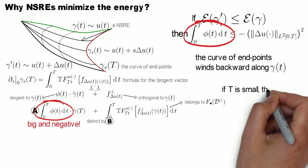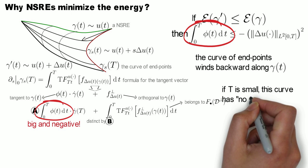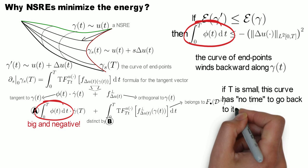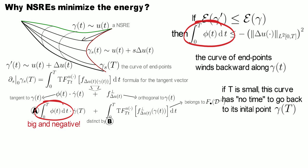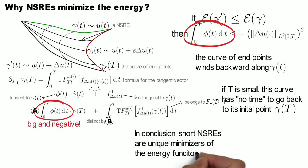If gamma is short enough then this curve of endpoints has no time to go backward to the initial point gamma of t. In particular, it is impossible to construct another curve which has the same endpoints as gamma but has lower energy. This basically means that gamma minimizes the energy functional, which was to be shown.